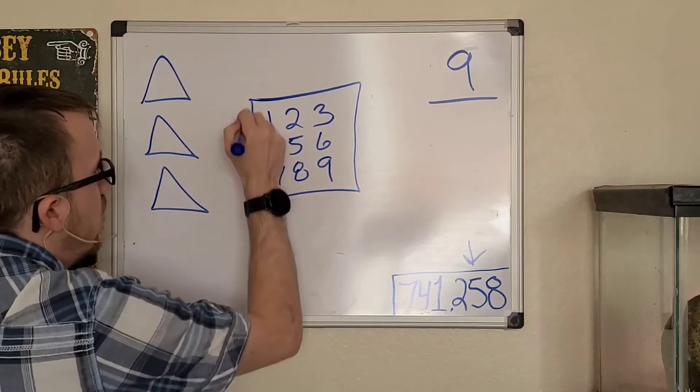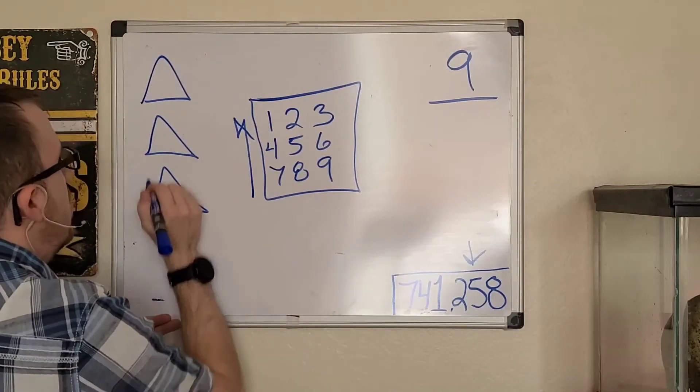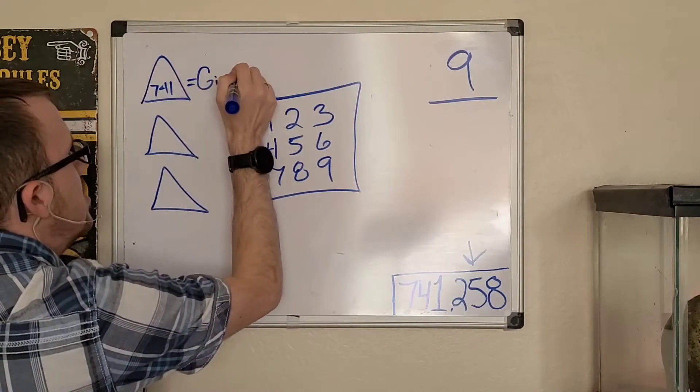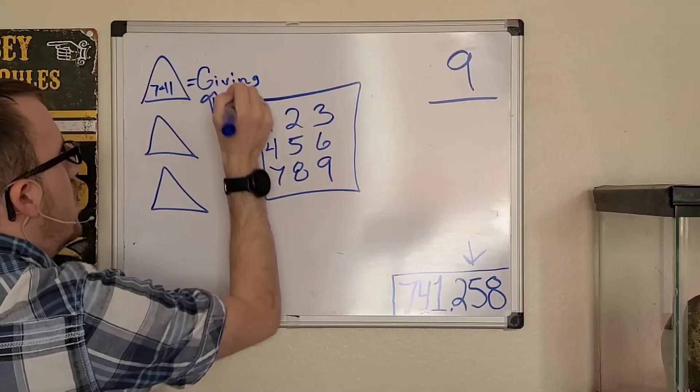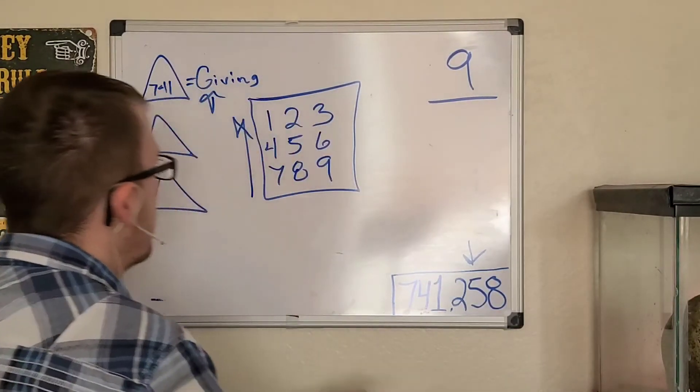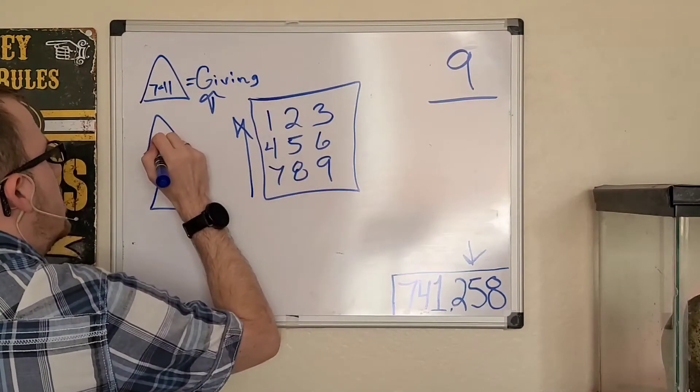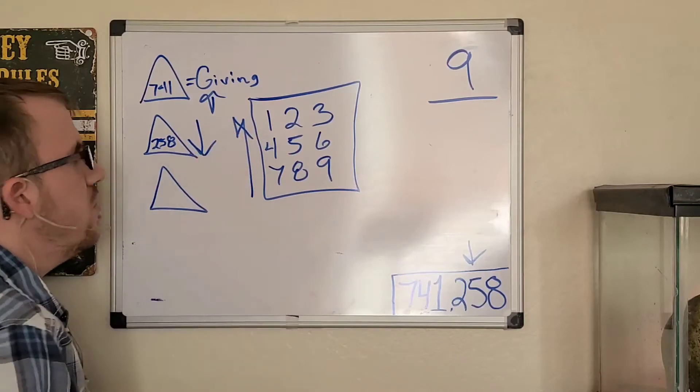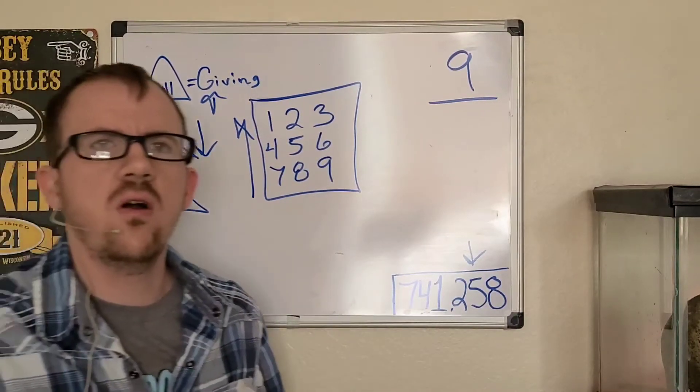The very first pattern you're going to see is 741. It looks like it is going up. This is 741, the giving energy. Next one is 258. This is going down. Now does this mean it's evil and wrong? It does not.